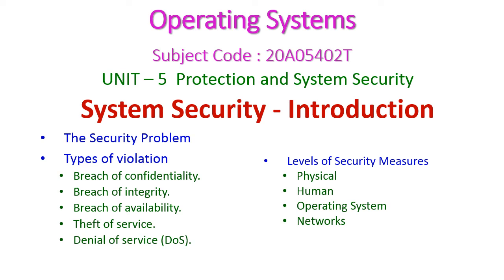Hello friends. In this operating system class, we will start the second part of the fifth unit, that is system security. In today's class, we will see the introduction to system security, the security problems, and types of violations — breach of confidentiality, breach of integrity, breach of availability, theft of service, and denial of service. After that, we will see the levels of security measures: physical, human, operating system, and network level.